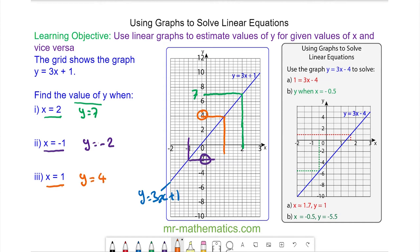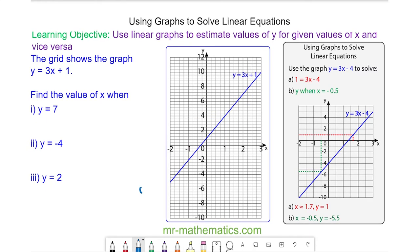Okay let's try some more questions. So we still have the line y is equal to 3x plus 1 but now we're going to find the value of x when we have y is equal to 7.